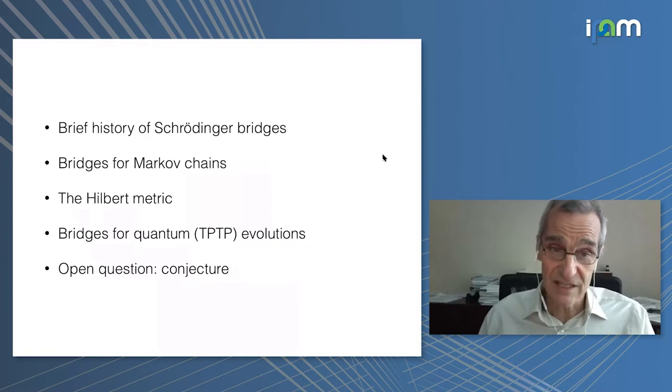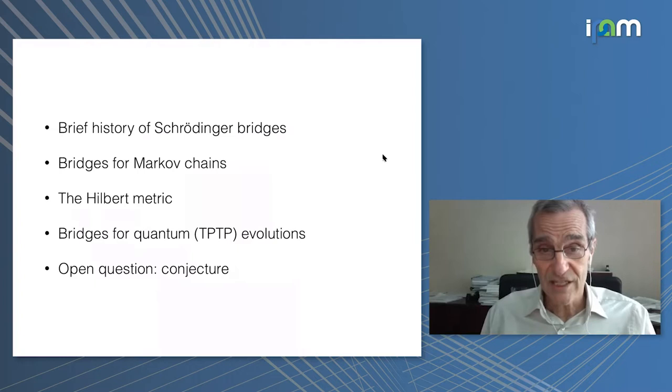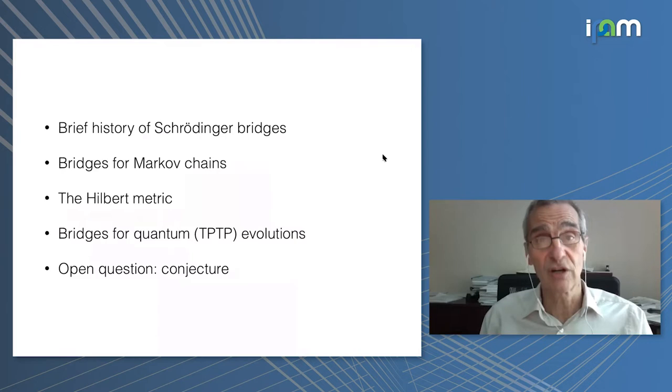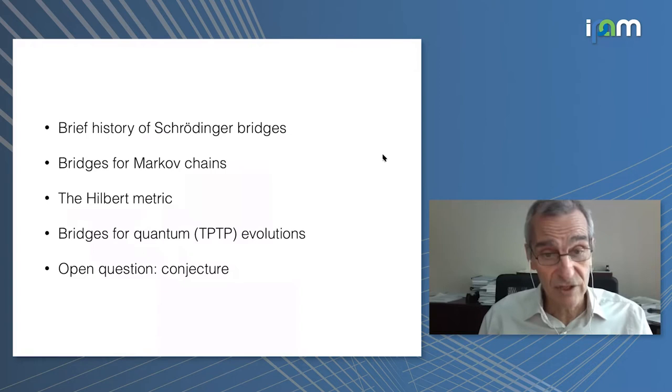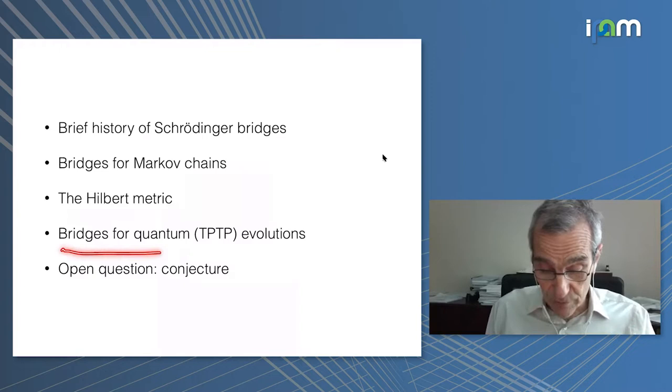First I would like to discuss and give a brief history of the Schrödinger bridges, transition to Markov chains, then I'll talk about the Hilbert metric. It's also a classical concept that is extremely helpful but again not so widely known, and then introduce bridges in a quantum setting.